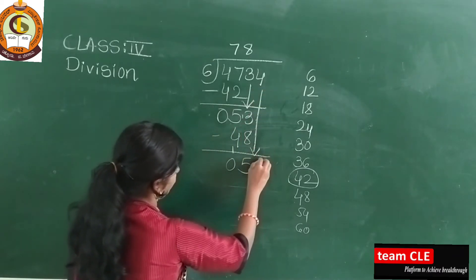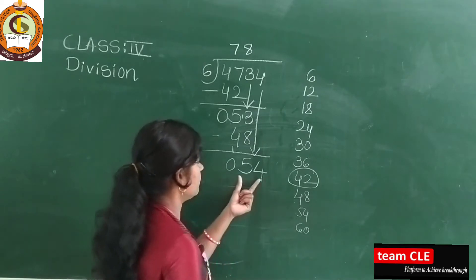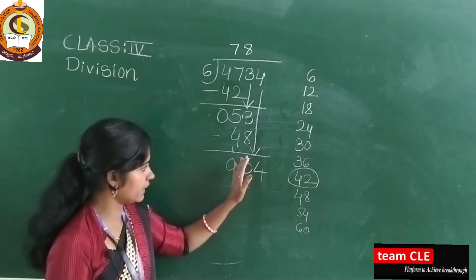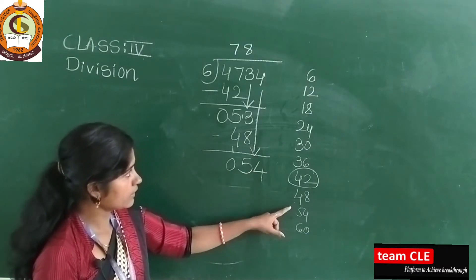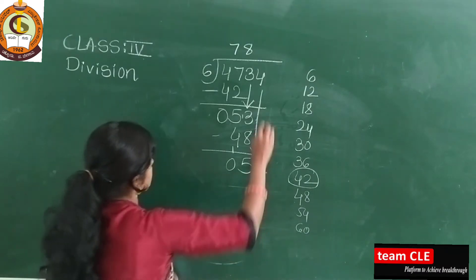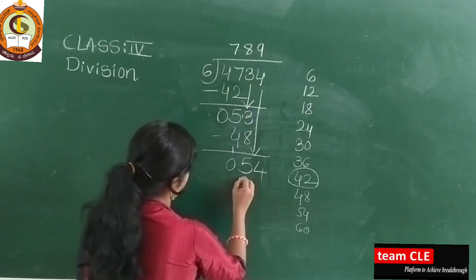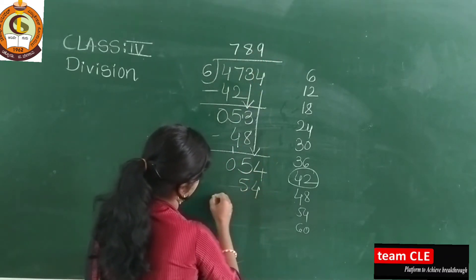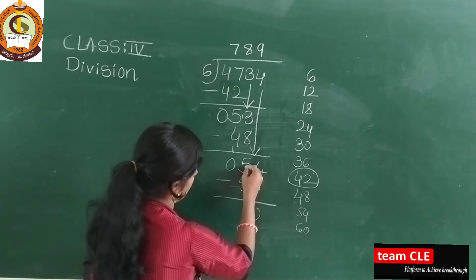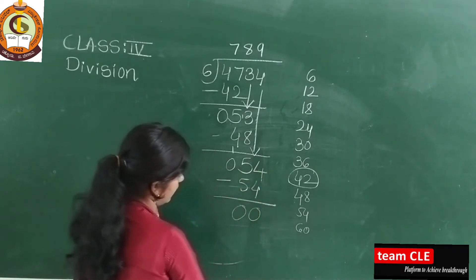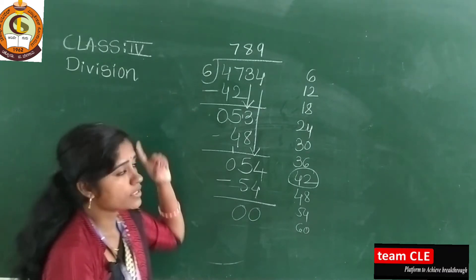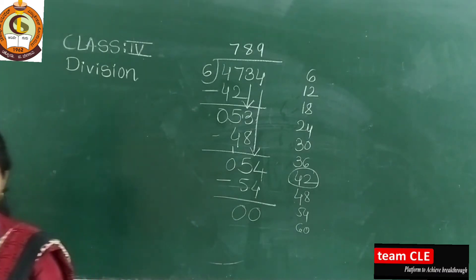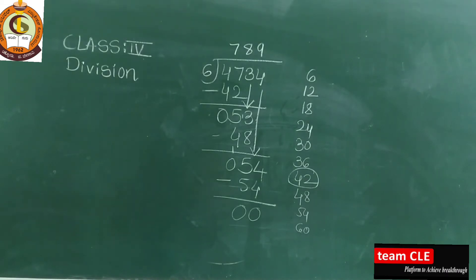Bring down the 4. Most students might see just 4, but it becomes 54. So 6×9=54. Subtract: 4 minus 4 is 0, and 5 minus 5 is 0. The quotient is 789. I hope you are getting my point — please keep practicing this kind of example.